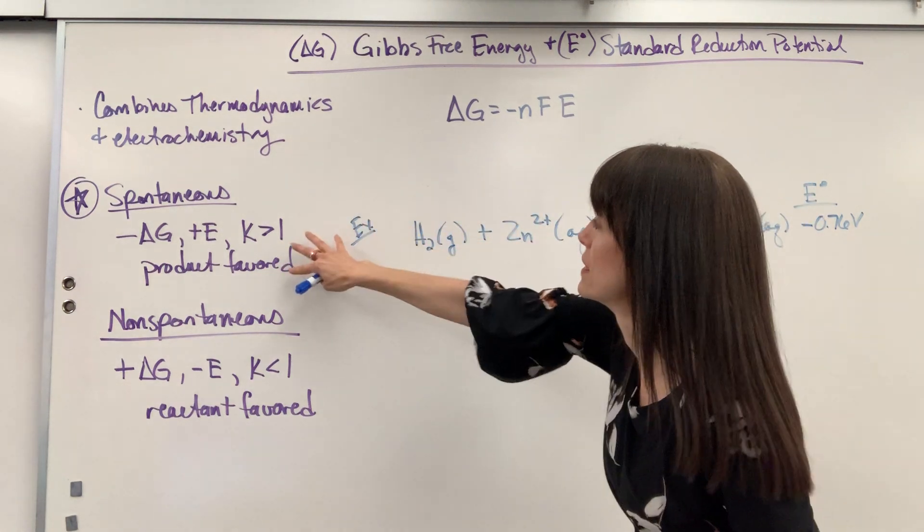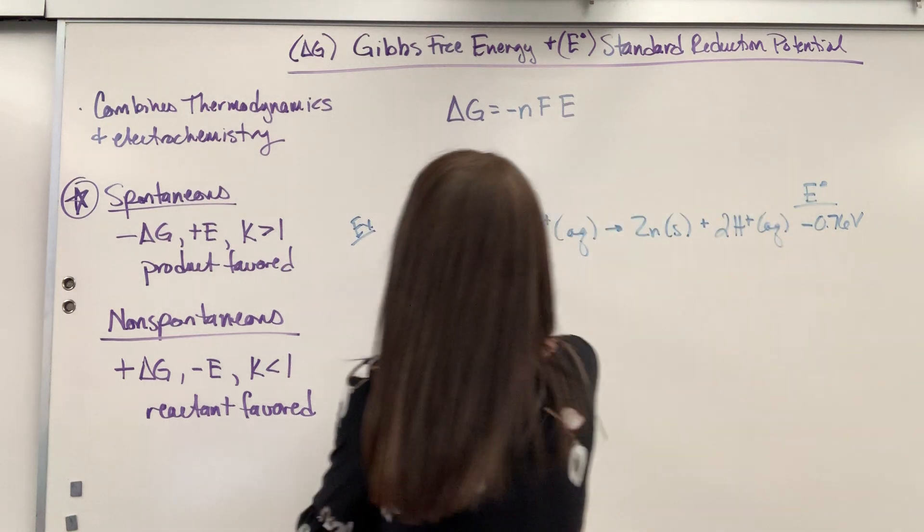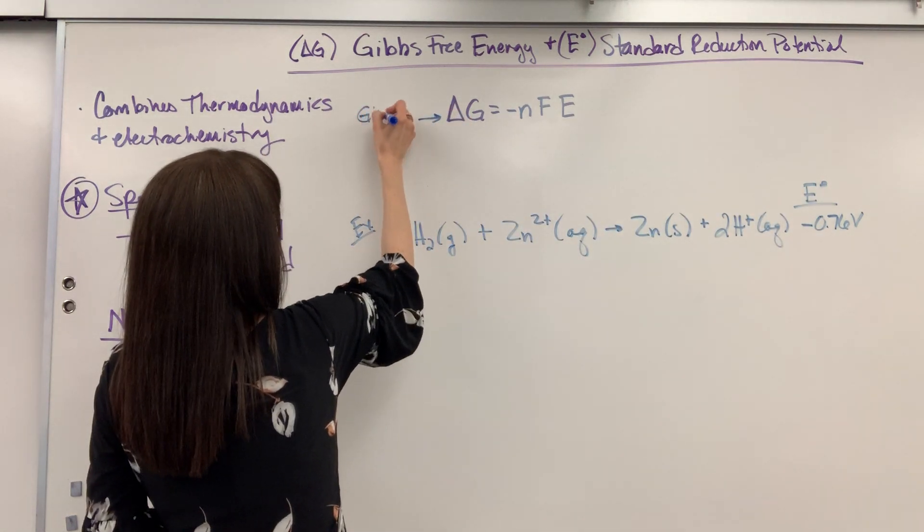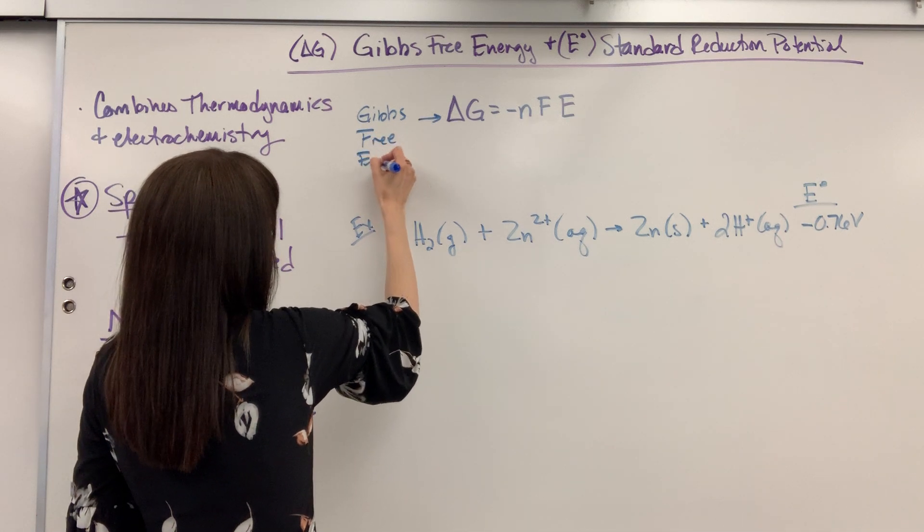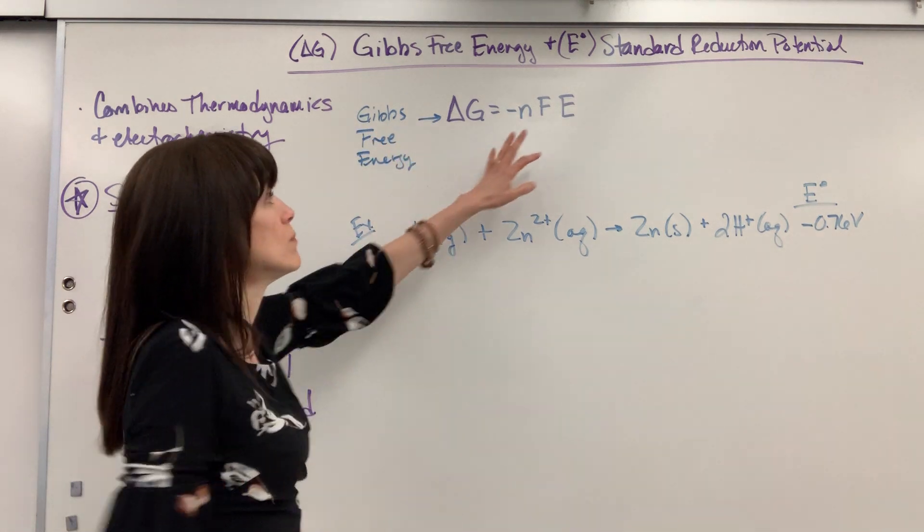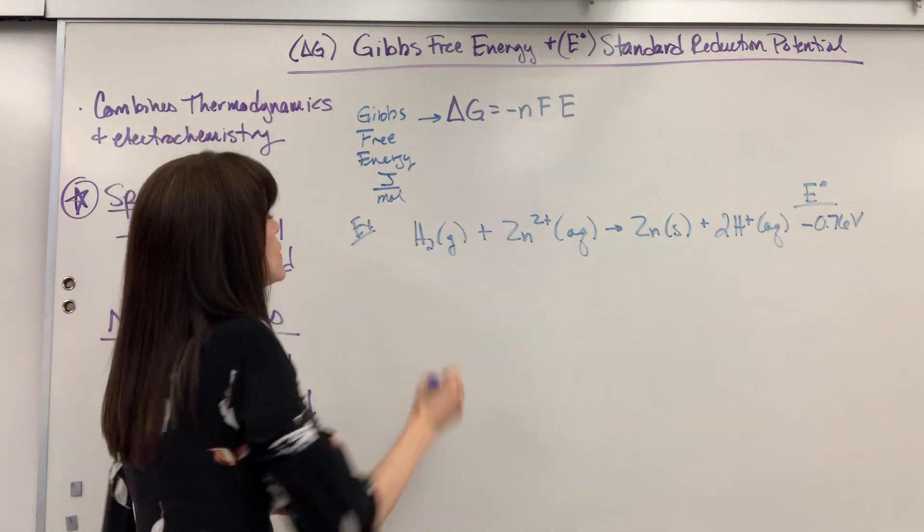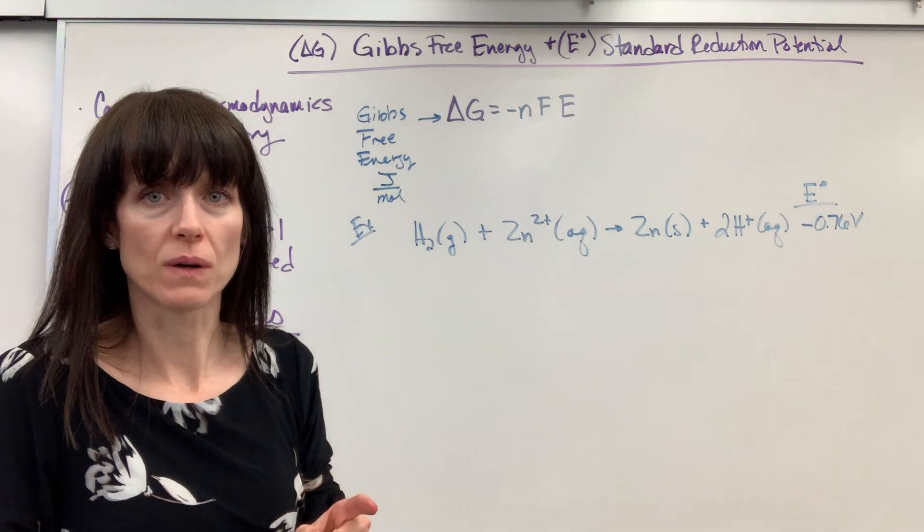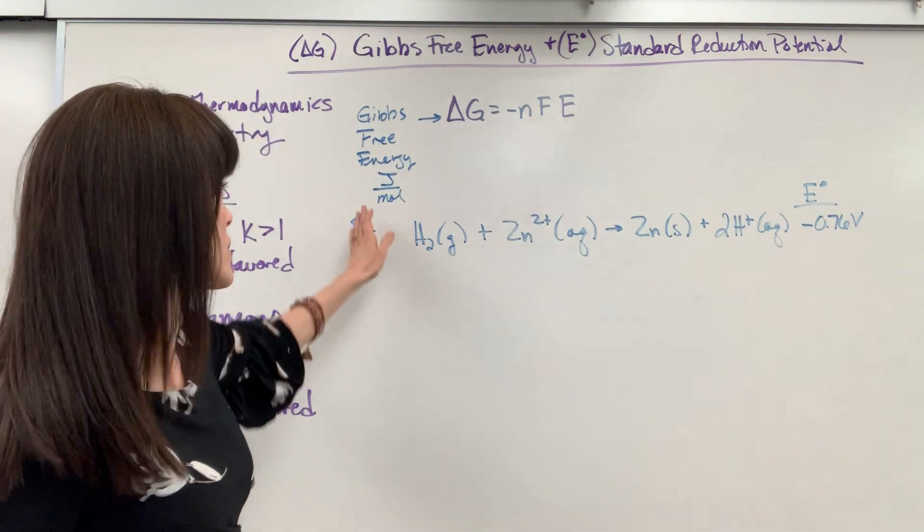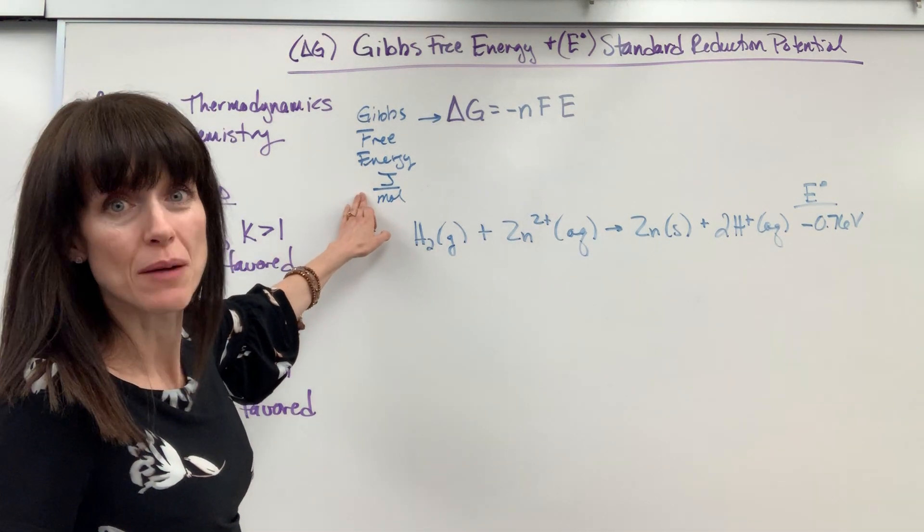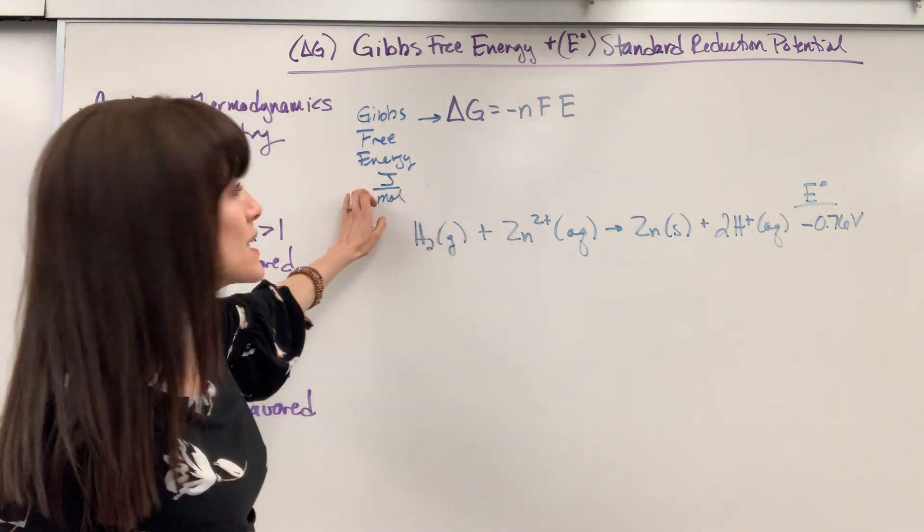Let's label everything. G is Gibbs free energy and your unit on this when you multiply from these units you will see is joules per mole. Be careful on this is joules, so if you're asked to report this in kilojoules you're going to have to divide that by a thousand to get it to kilojoules. When you multiply from these units it gives you joules.